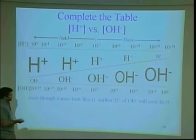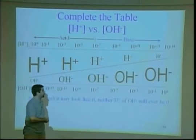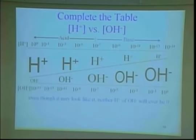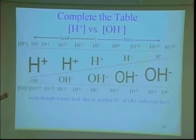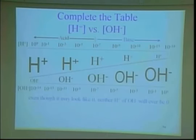Neither hydrogen ions nor hydroxide ions will ever be zero, because 10 to the zero is one. You can have greater than one molar concentrations for other things — like sulfuric acid at 12 molar, nitric acid at 18 molar, hydrochloric acid at 12 molar — very concentrated acids. One molar is the theoretical end of what we're talking about in terms of water-based auto-ionization. That's why our scale is cut off there.